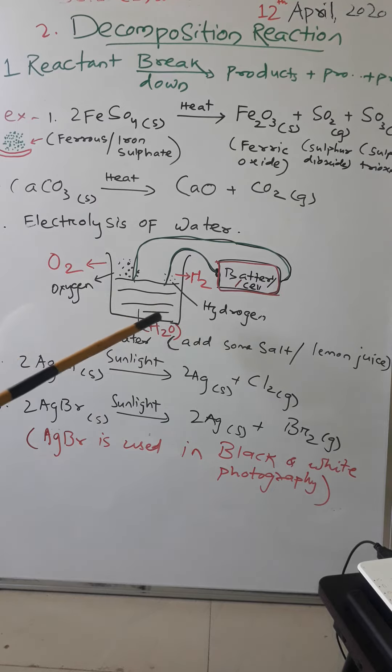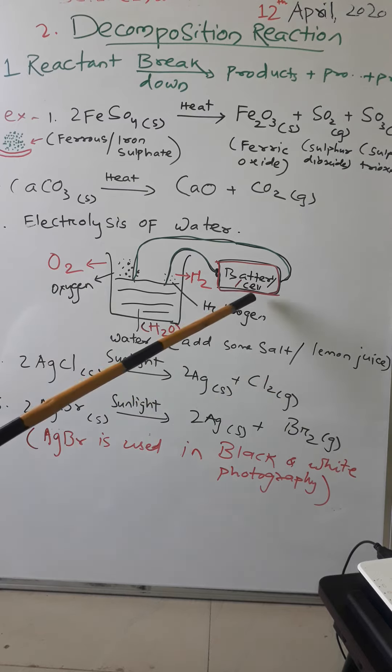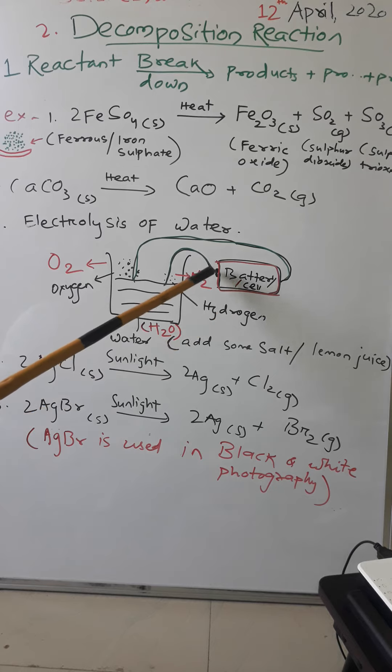Like take one beaker, glass, or you can take some plastic bottles or plastic cup. Take some water here. In that water you can add some salt or lemon juice to increase its conductivity. Then you will arrange a battery or a cell. From these two terminals you will take some wires and just insert them inside the water.